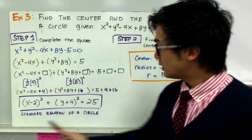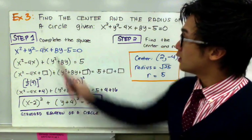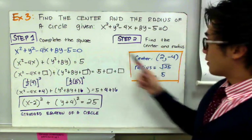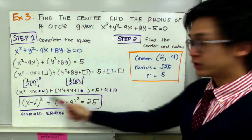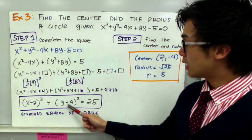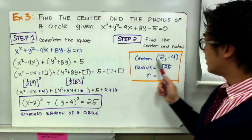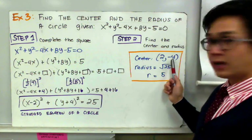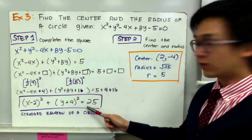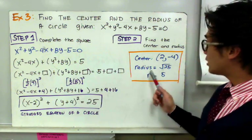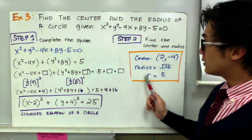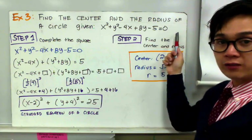Now that we have the standard equation of the circle, we can find the center and radius. From (x − 2)² + (y + 4)² = 25, the center is at (2, −4). With r² = 25, taking the square root gives r = 5. This is the center and radius given the general equation of the circle.